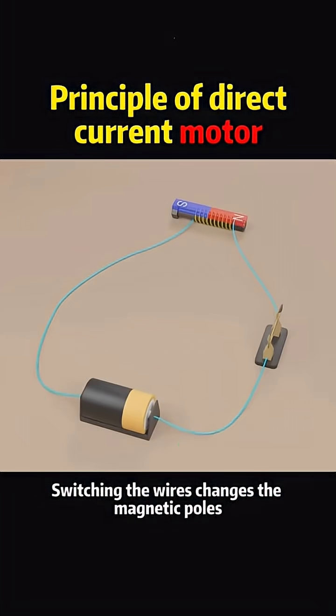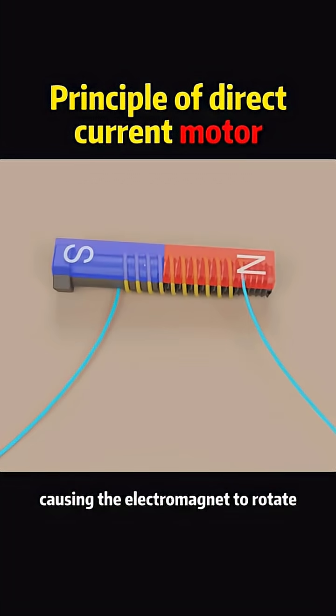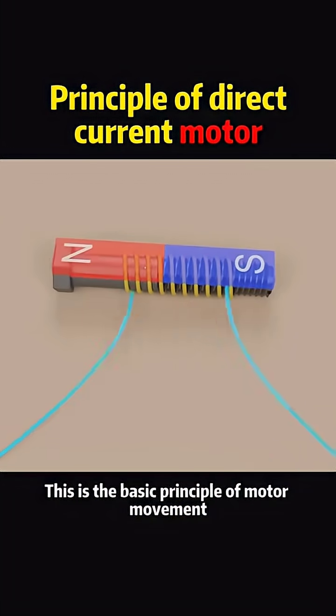Switching the wires changes the magnetic poles, causing the electromagnet to rotate. This is the basic principle of motor movement.